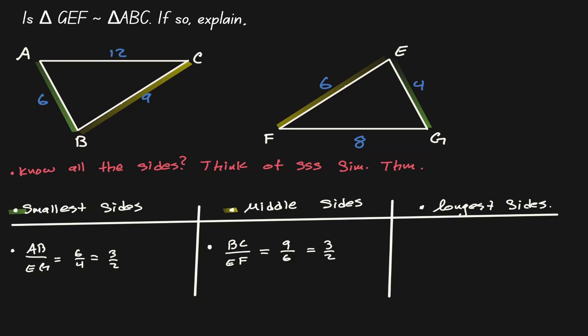Let's find the proportions of the longest sides. On the left triangle that would be AC with 12, and on the right triangle that would be FG with 8. That gives us 12 over 8, which is still equal to 3 halves. Notice that all sides have the same proportion, so by side-side-side similarity theorem, we can claim that these two triangles are similar to each other.